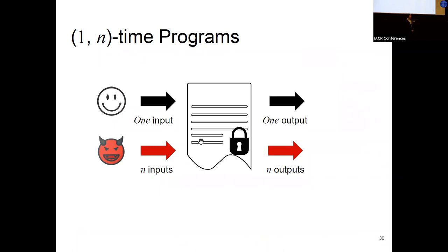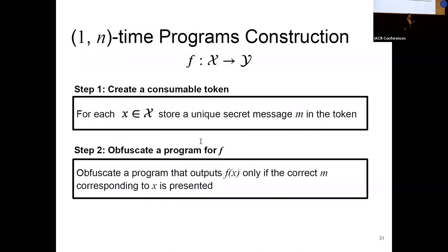The second application is one end time programs. These are programs that are secret or contain some secret data. So you give it to the recipient where the honest party can execute that program over one input, while the malicious party can execute that program over up to N different inputs. This is a variation of the one-time program construction that we know from before. But the difference is that we build our construction based on the real-world memory devices that we have. And for this, we account for the power gap between the honest party and the malicious party. So we couldn't just use garbled circuits and whatnot. We had to use I.O. in order to construct one end time programs.